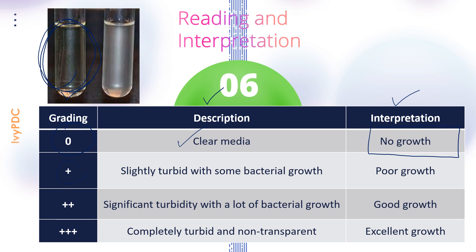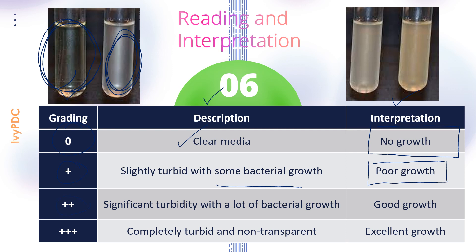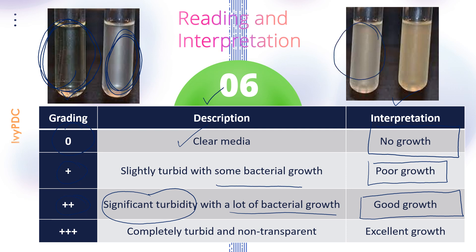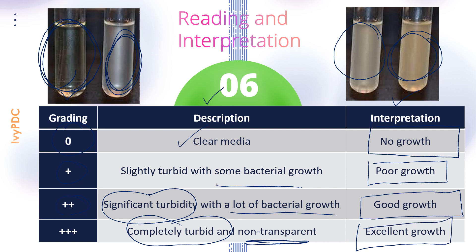A grade of one plus is given when the test tube is slightly turbid, indicating some bacterial growth — interpreted as poor growth. Two plus is given when there is significant turbidity, indicating a lot of bacterial growth, interpreted as good growth. A grade of three plus is given to a nutrient broth that is completely turbid and non-transparent, interpreted as excellent growth of the organism.